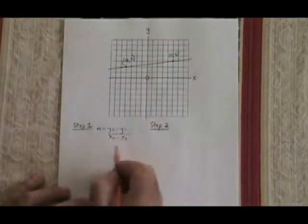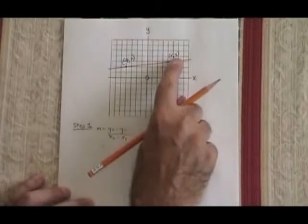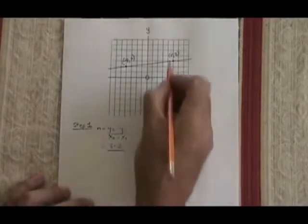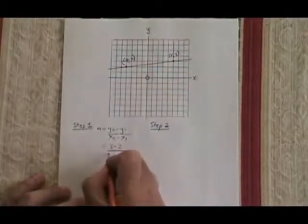So filling in this formula, I end up with y2 minus y1 becomes 3 minus 2. x2 minus x1 becomes 5 minus negative 4.